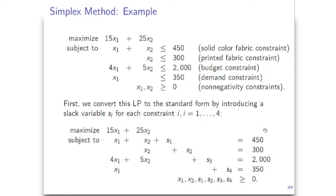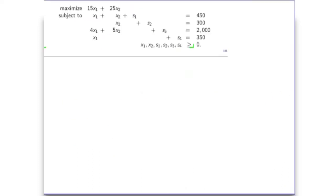The first step we take when we solve the problem using the simplex method is to convert it to the standard form. Remember, the standard form is when we get rid of all the inequalities except for the non-negativity constraints. We do it by introducing slack variables for all the constraints. In this case, we have all constraints in the less-than-or-equal-to form, and as a result we obtain the following model.